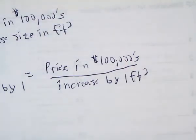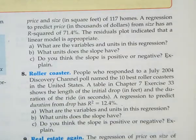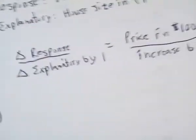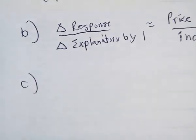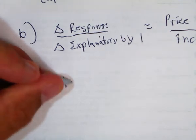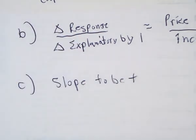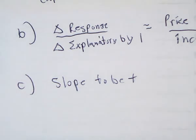Okay, and then C, it says, do you think the slope is positive or negative? Well, as the house gets bigger, what do we expect to happen? So, we would expect slope to be positive because as the house gets bigger, we expect the price to increase.